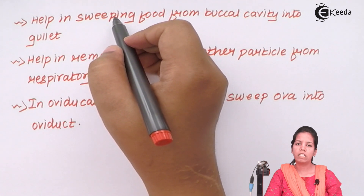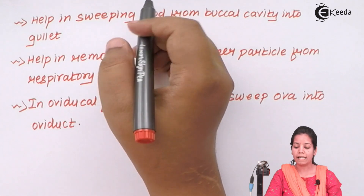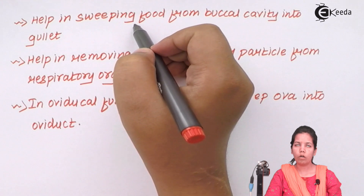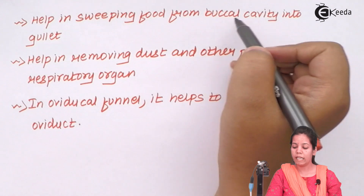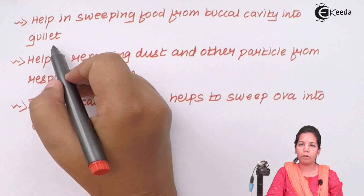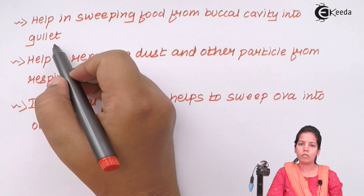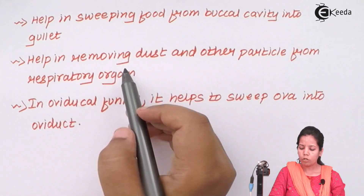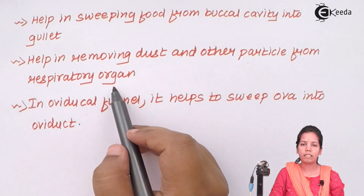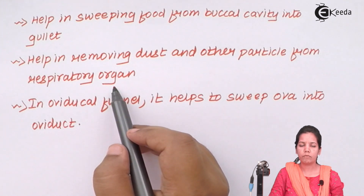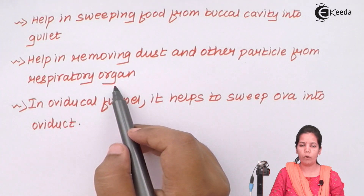The functions of ciliated epithelium include helping to sweep food down from your buccal cavity or oral cavity into the gullet — your food pipe or esophagus, which is just adjacent to your windpipe. It also helps in removing dust and other particles from your respiratory organs. The cilia present in this type of tissue trap dust particles whenever you breathe in air and then remove them by the process of exhalation or expiration.